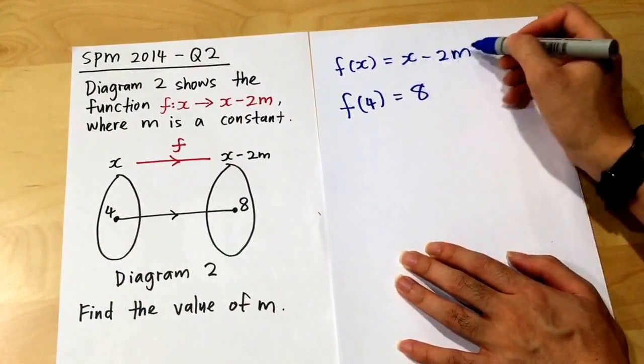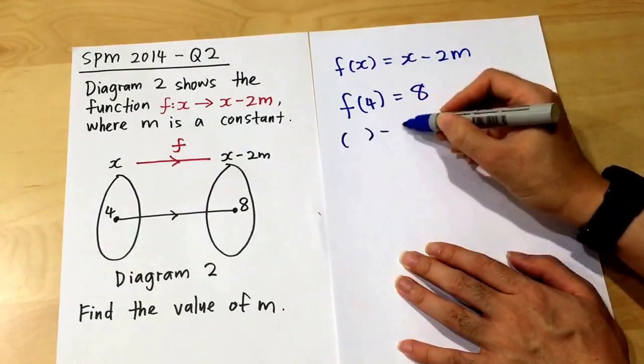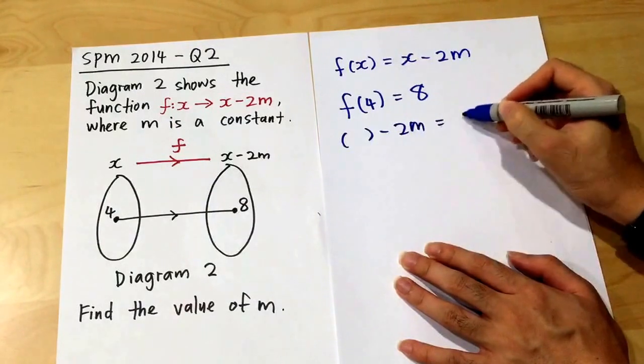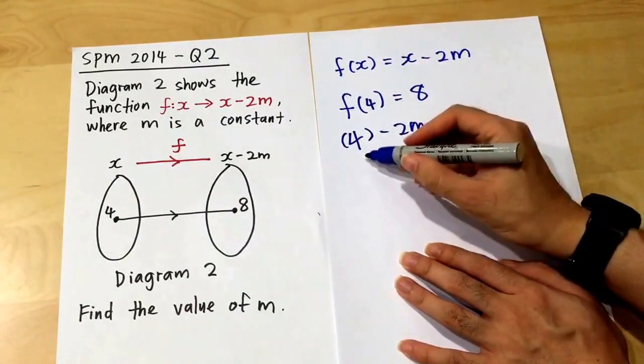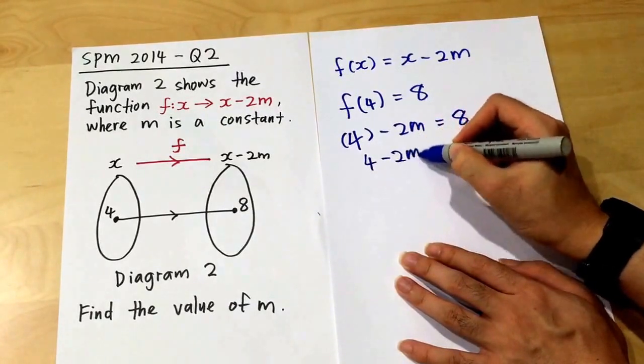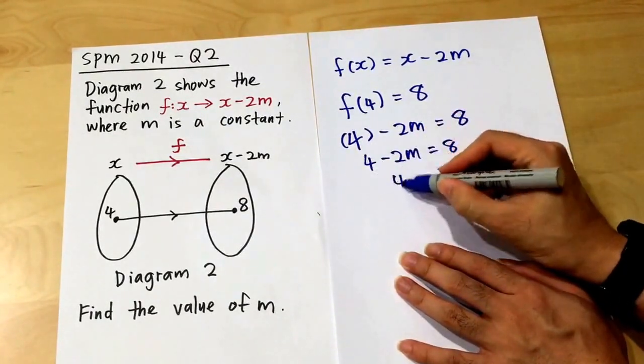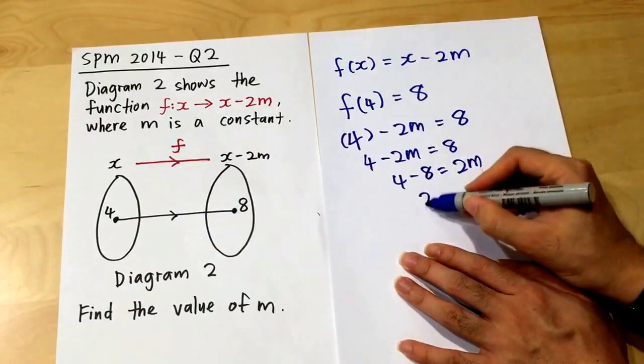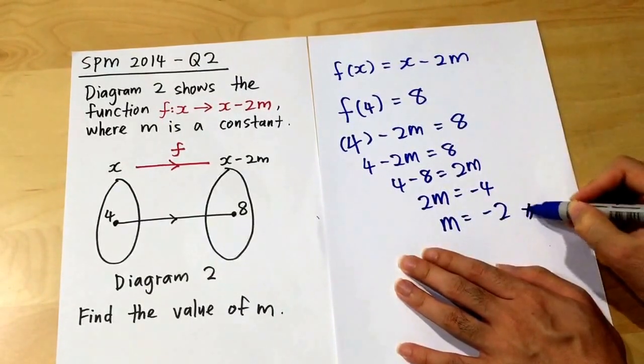I substitute 4 into my x. So I have 4 minus 2m equals 8. My x is 4. I move the 2m here and move the 8. Here is 4 minus 8. So basically, 2m equals negative 4. m equals negative 2. Done.